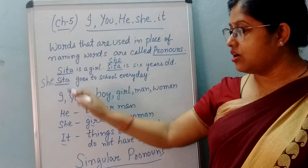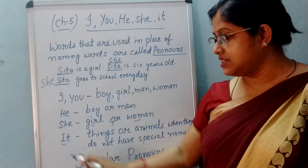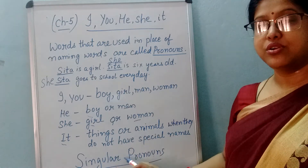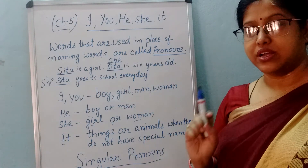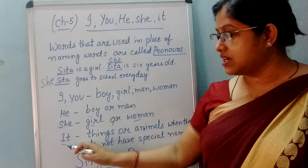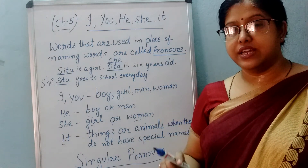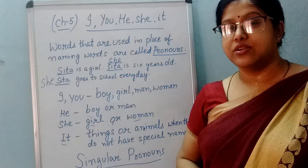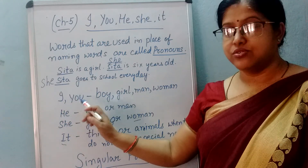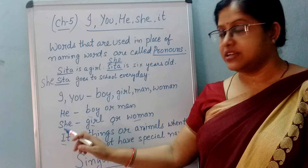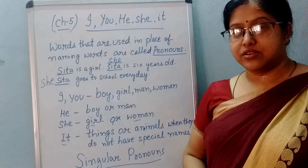So these all — I, you, he, she, it — ye kya hai? Singular pronoun. Singular means one. Jab ek ko denote karta hai, to ye singular hota hai. Aur is ke liye I, you, he, she, it lagta hai. Ok children?